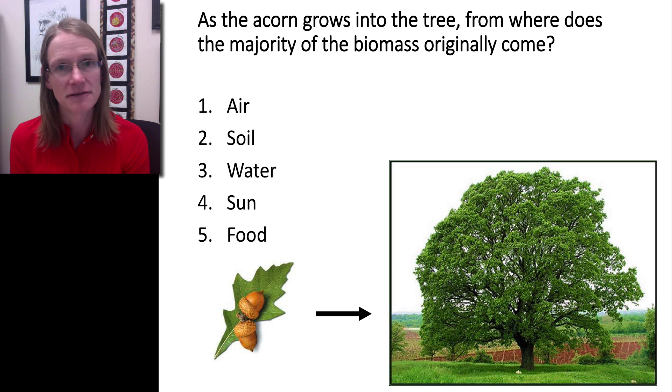Number five is food, the sugars. As we already mentioned, an acorn or plant is an autotroph, so they're getting all their own energy themselves through photosynthesis. Clearly, they don't get energy from an external source as food. Sun provides the necessary energy to make this happen, but it does not actually contribute to the mass itself.